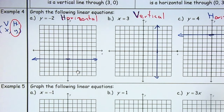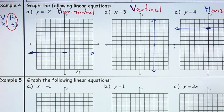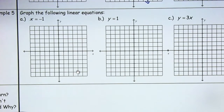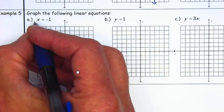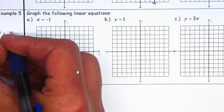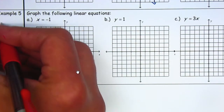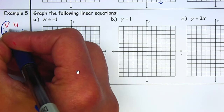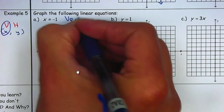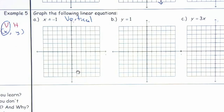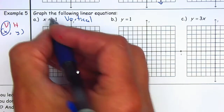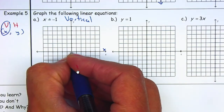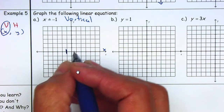Now for example number 5 — try it, see what you get, and then we can work it out. Go ahead and pause it. Example number 5: graph the following equations. X is equal to a number, so I write down x, y, Van Helsing. If it's x is equal to a number, it's going to be a vertical line — write down the word vertical. It's negative 1, so you have to cross the x-axis at negative 1. Go to the left and then expand the line.